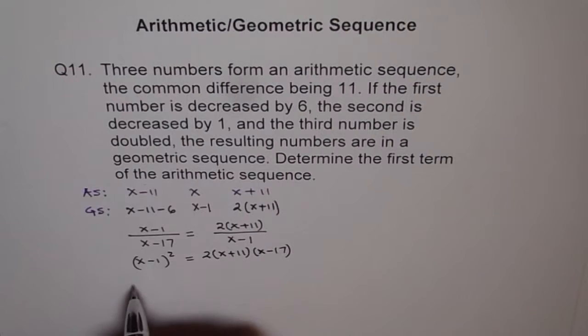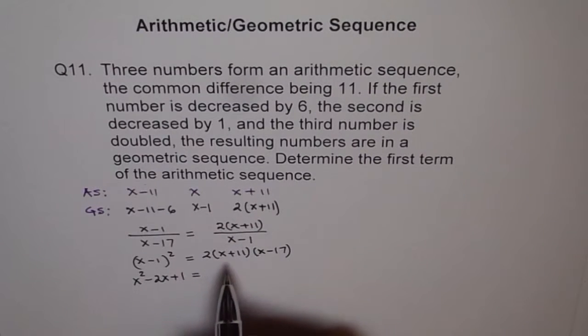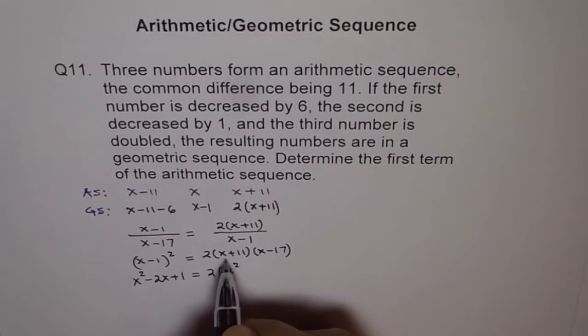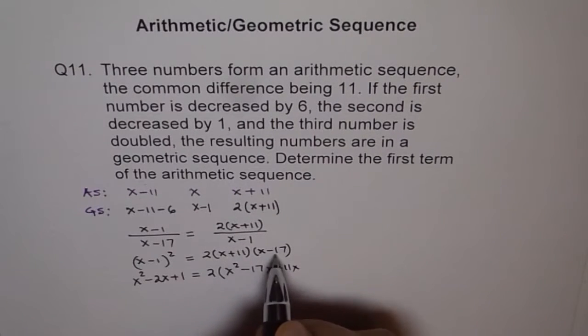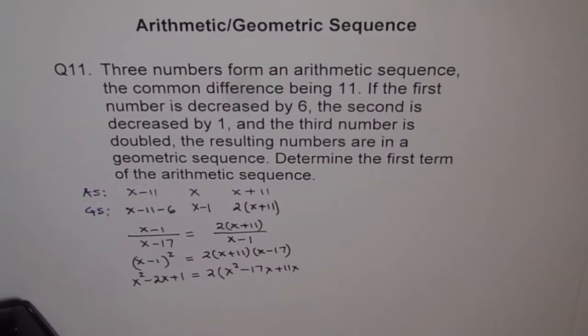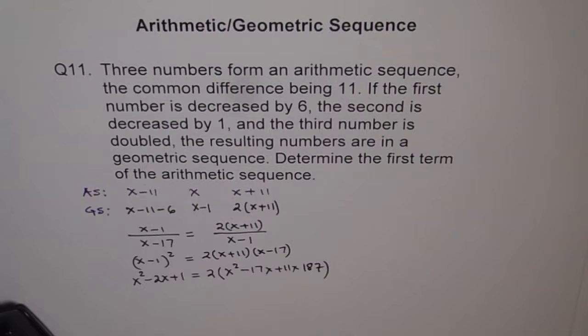Now let's expand it. So when we do that, we get here x square minus 2x plus 1 equals to, let's expand this also, right? So we get 2 times x times x is x square minus 17x and plus 11x and this becomes 17 times 11. Let's use calculator, right? 11 times 17 equals to 187.